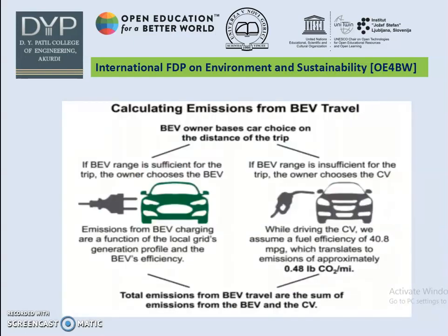In this slide we will see how to calculate the emissions from BEV. If the BEV range is sufficient for the trip, the owner chooses the BEV. If the BEV range is insufficient for the trip, the owner chooses the CV. Emissions from BEV charging are a function of the local grid's generation profile and the BEV's efficiency. While driving the CV, we assume a fuel efficiency of 40.8 mpg, which translates to emissions of approximately 0.48. Total emissions from BEV travel are the sum of the emissions from BEV and the CV.